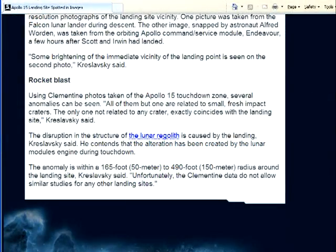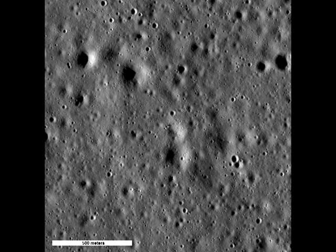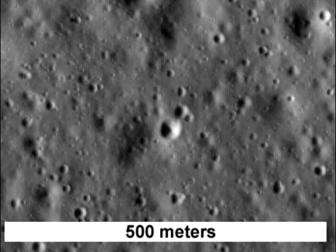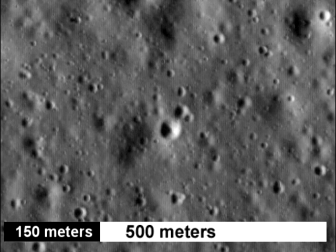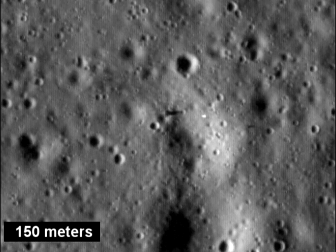According to the Space.com article that this photo was printed in, the anomaly is within a 165ft (50m) to 490ft (150m) radius around the landing site. Knowing this information, we can take the high-resolution image of the Apollo 15 landing site and zoom down so that the image is 500m across. Because the splotch was at most 150m across, it should show up at this magnification. So where is this bright anomaly that was supposedly caused by the engine plume spreading out across the surface?